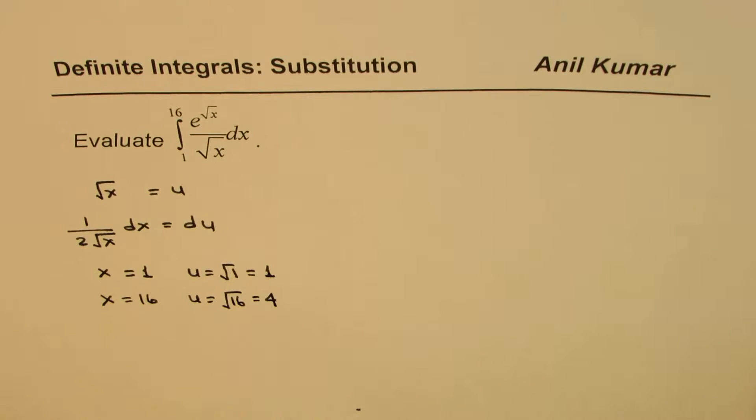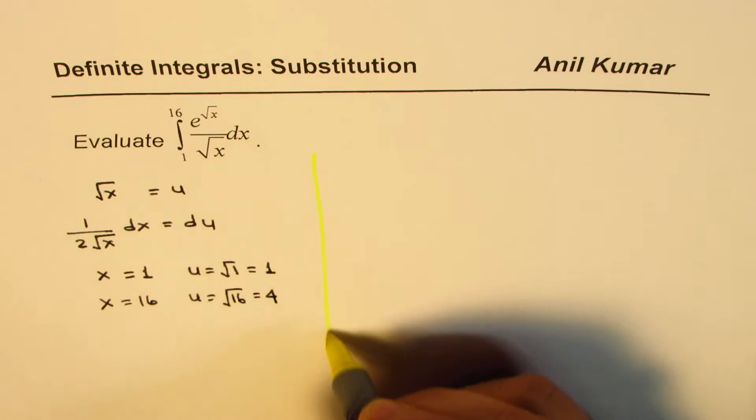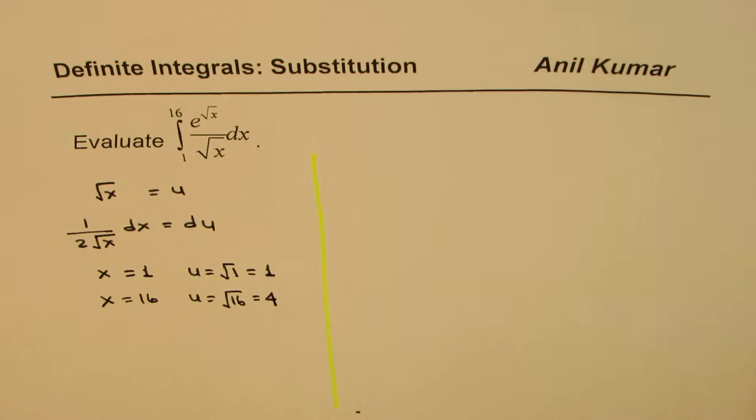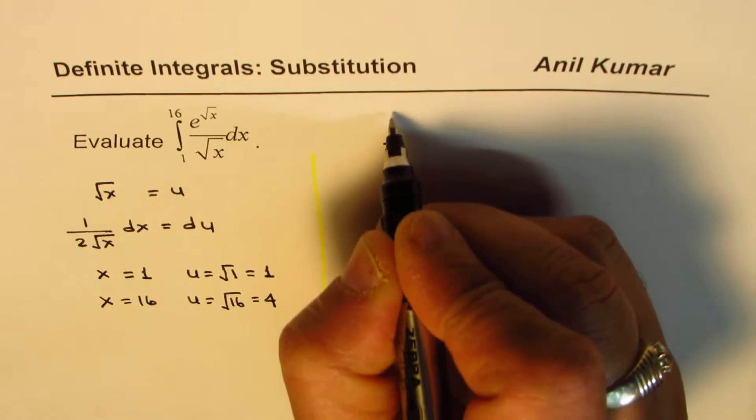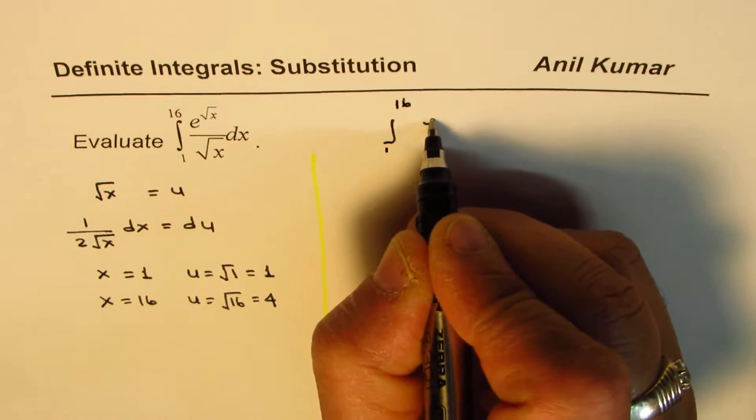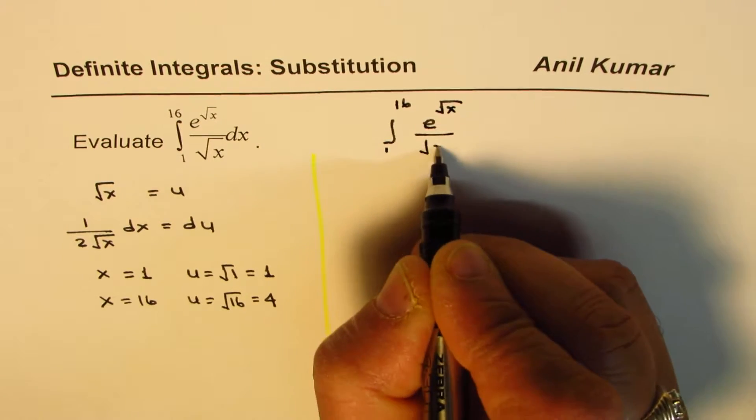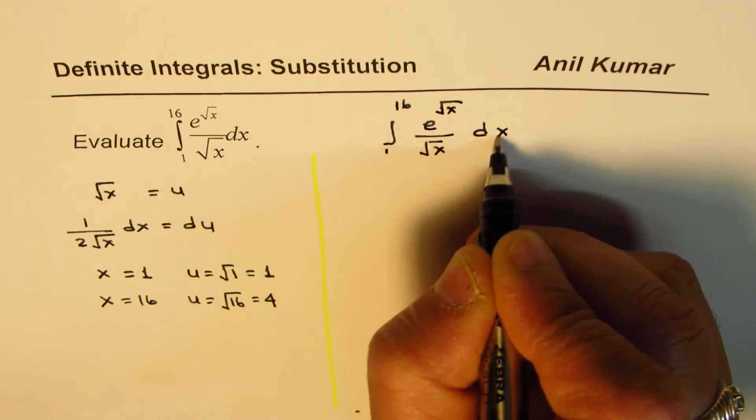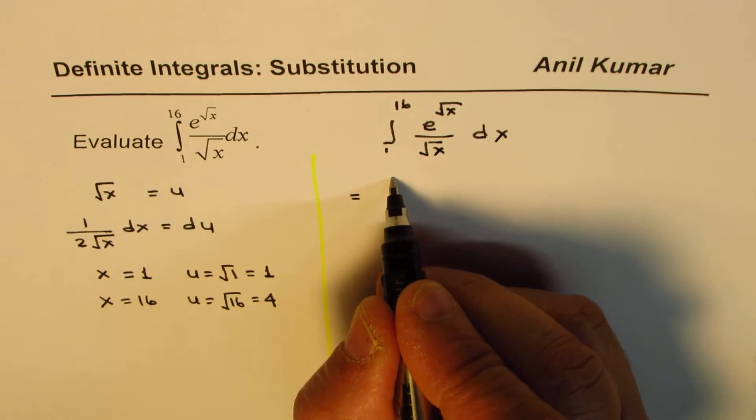And therefore what we see here is whenever you do substitution as we've done here, the integral now could be written as let me rewrite it. So we will start with 1 to 16 e to the power of square root of x divided by square root of x dx.